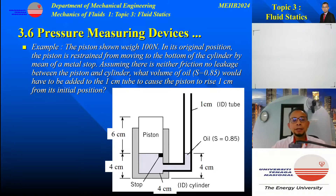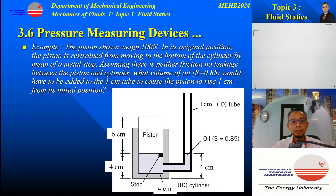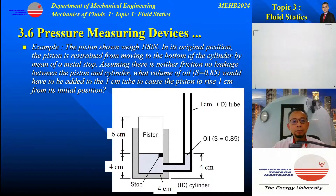We pour more oil, where the oil specific gravity equals 0.85, until the piston rises by a further 1 cm from its original position. So initially the oil level is at a certain height; after adding oil the piston rises 1 cm. We are asked to determine what volume of oil must be added to cause the piston to rise by 1 cm from its original position.